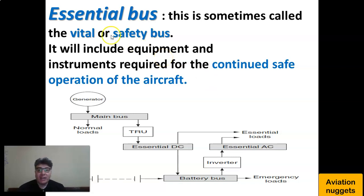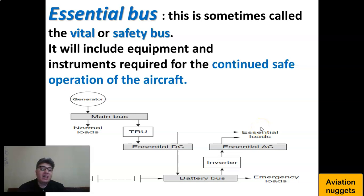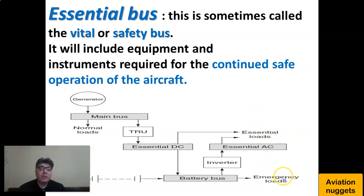Of much higher rank is the essential bus, which supplies the essential loads needed for the continuous safe operation of the aircraft. The essential bus is sometimes called the vital or safety bus. It includes equipment and instruments required for continuous safe operation. In case of a generator or wiring failure affecting essential loads, we may need to shed some loads for the sake of safe landing — essential loads may be shed to give priority to emergency loads.